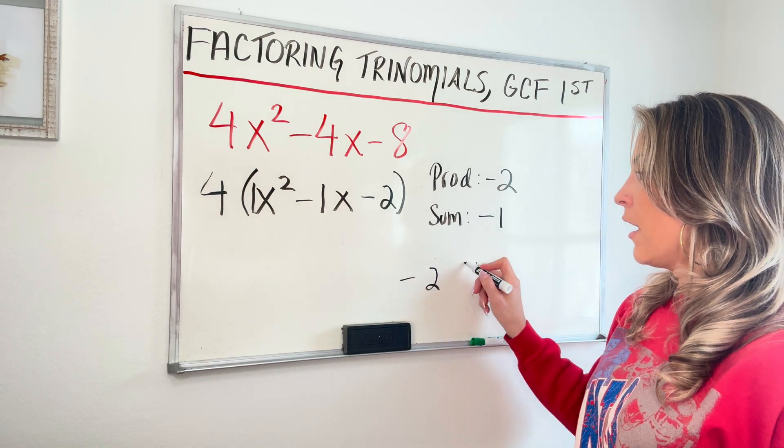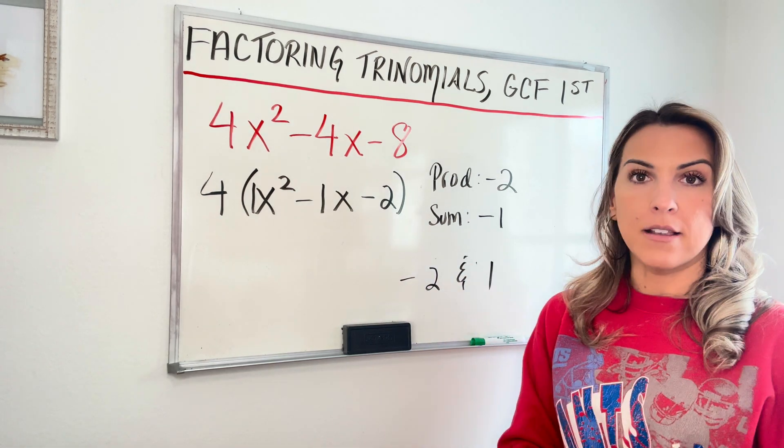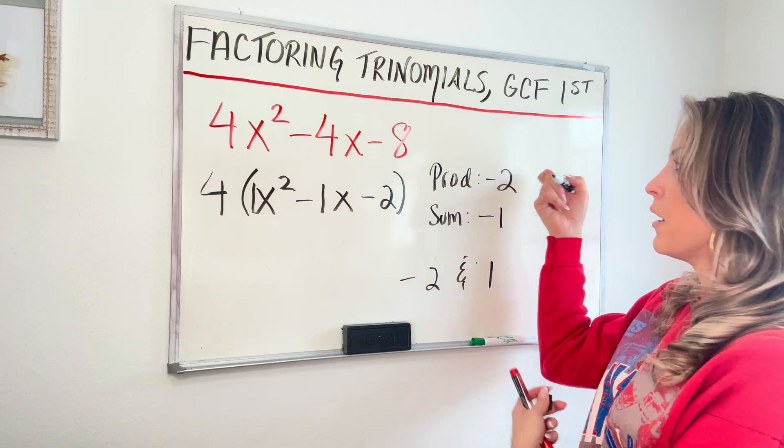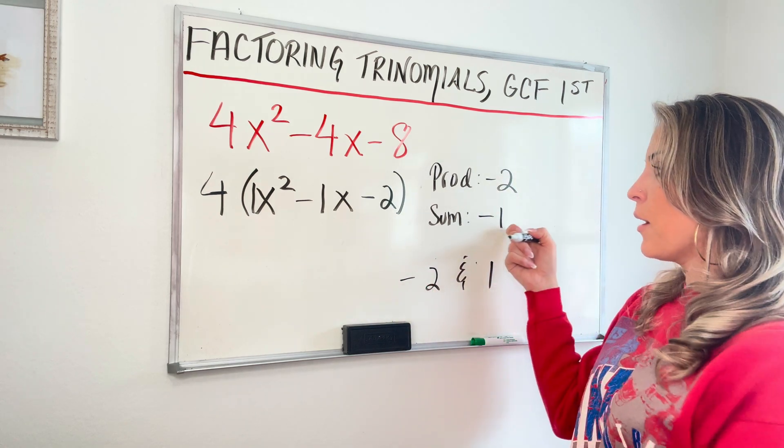And those numbers are negative two and positive one, right? Multiply them, you get negative two, add them, you get negative one.